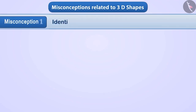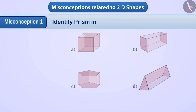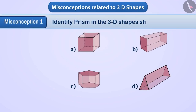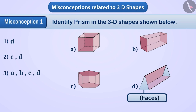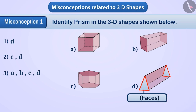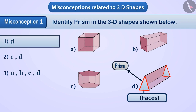Misconception 1: Identify the prism in the 3D shapes shown below. Many times students get the impression that only three-dimensional shapes with triangular base faces are called prisms. They think that only figure D is a prism, and with this understanding, option 1 is chosen, which is incorrect.